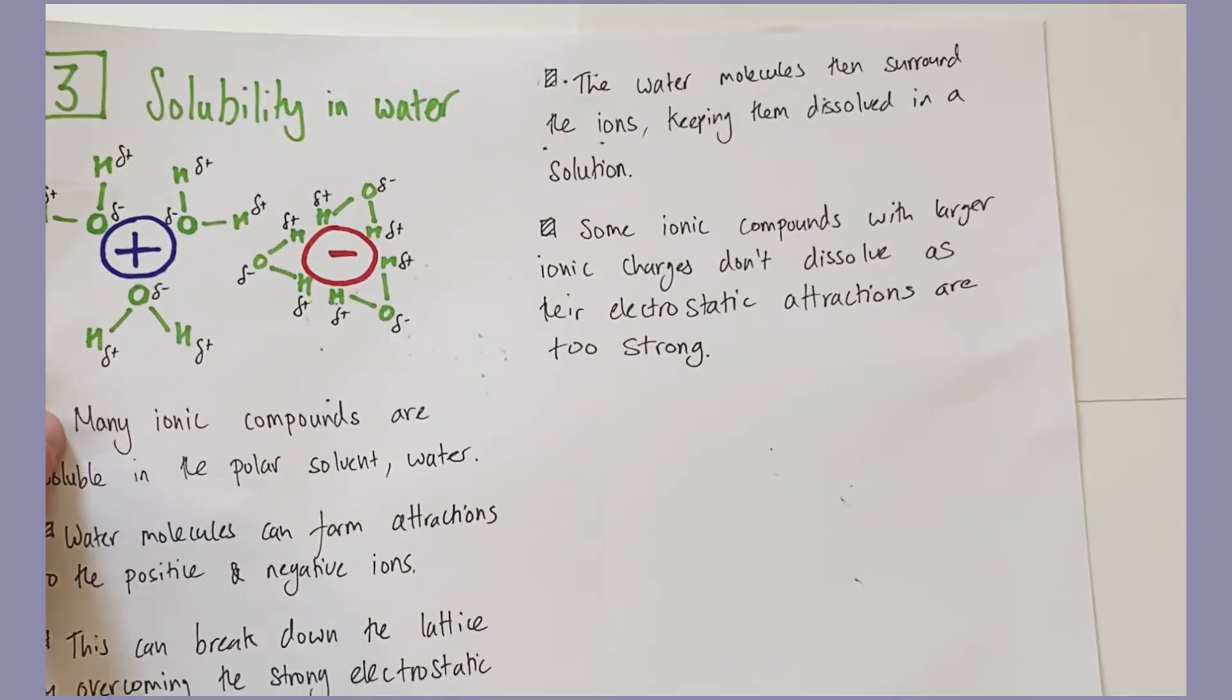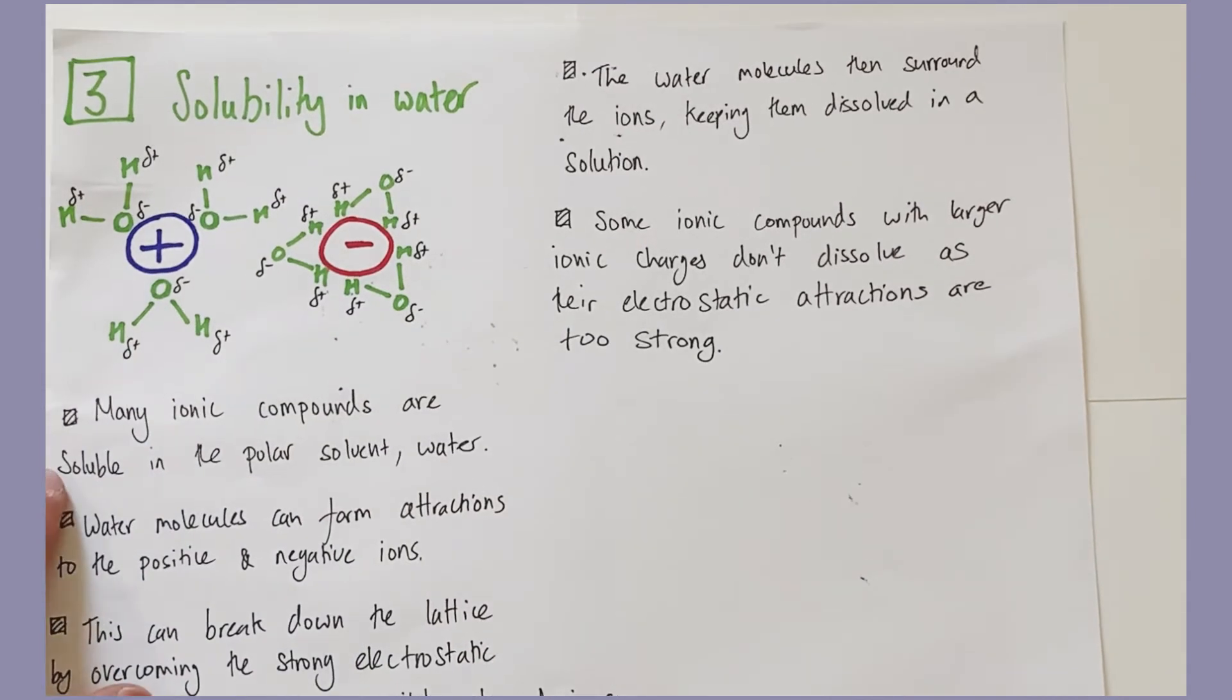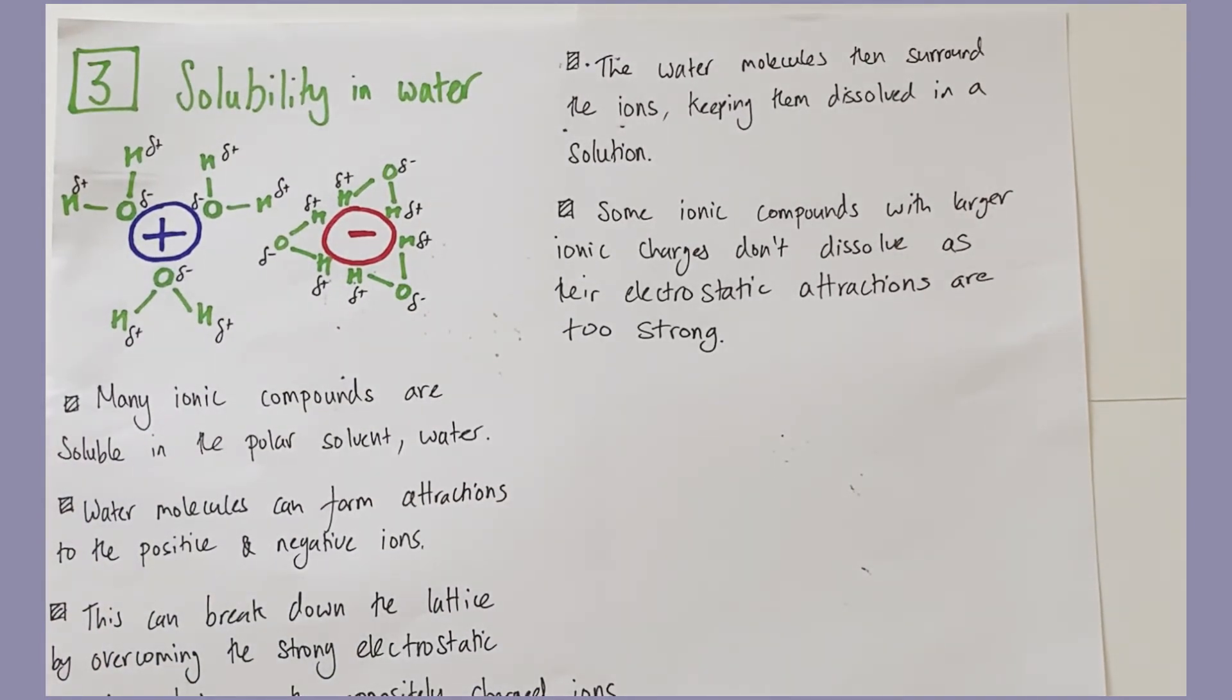I just quickly want to expand upon the solubility of ionic compounds in water only briefly. As I said before, water molecules are polar due to differences in electronegativity within the molecules. They have these partial charges. They have a smaller magnitude than the ionic charges themselves, but they can disrupt these ionic attractions.